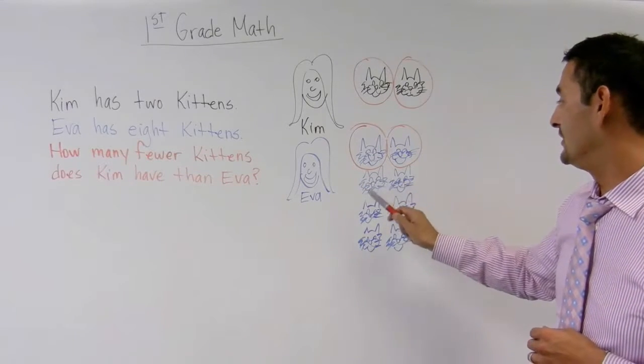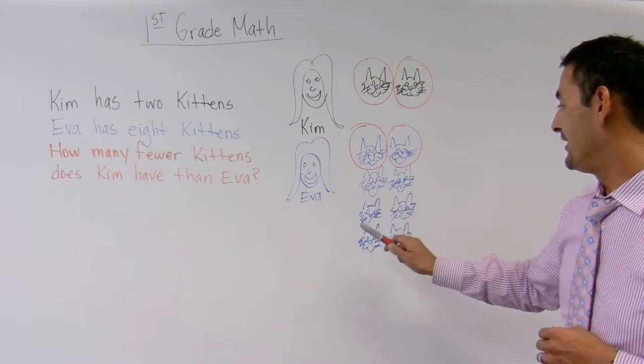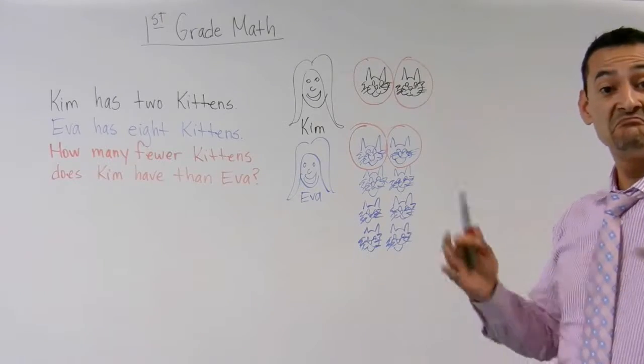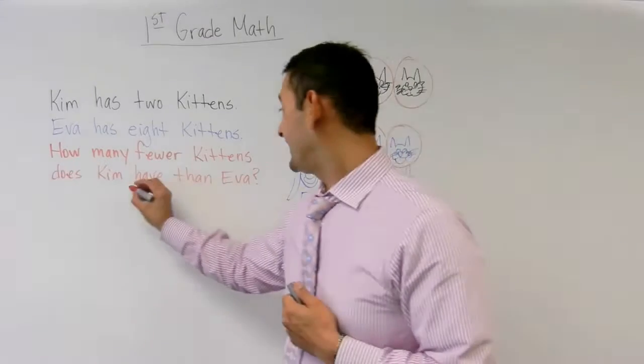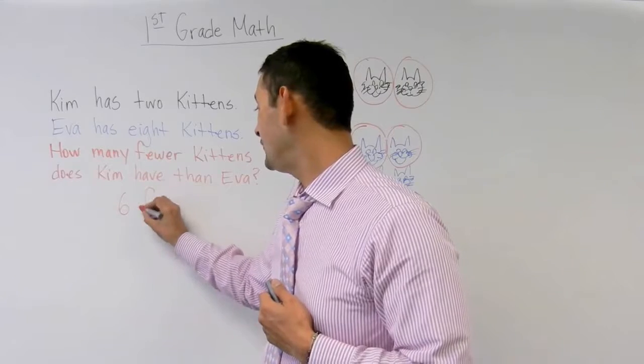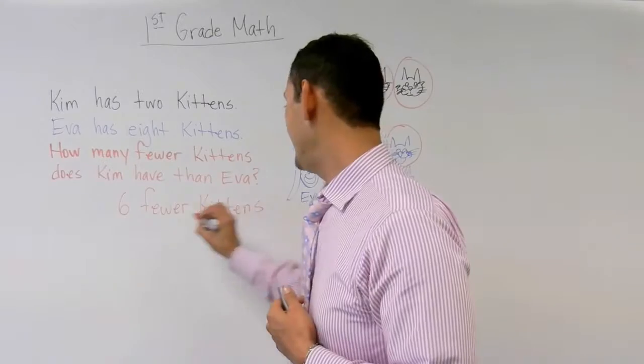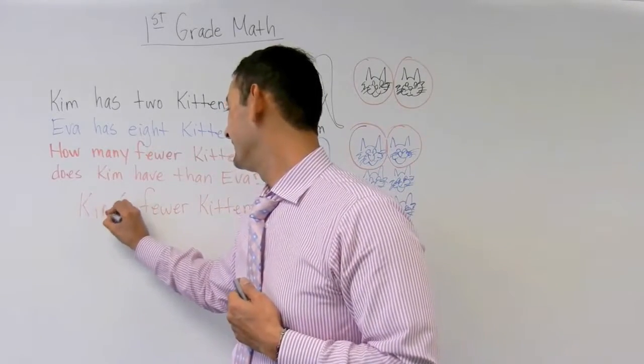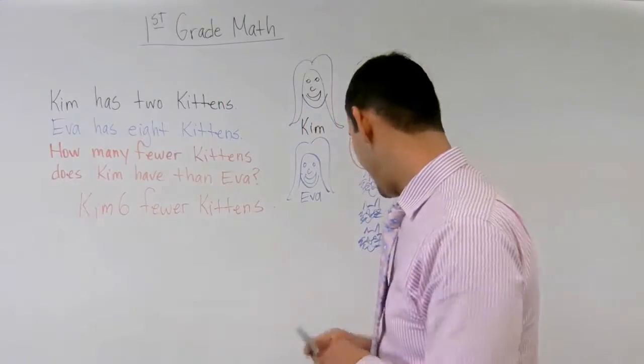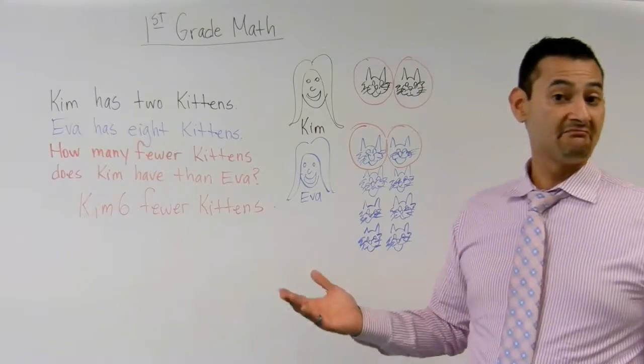One, two, three, four, five, six. And that's pretty much it. So Kim has six fewer kittens. And let me just go ahead and write Kim. And that's the answer, boys and girls. That's it.